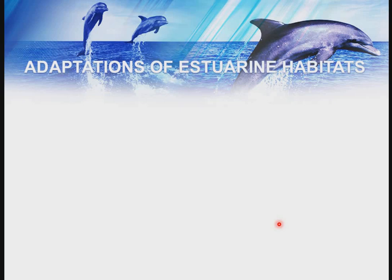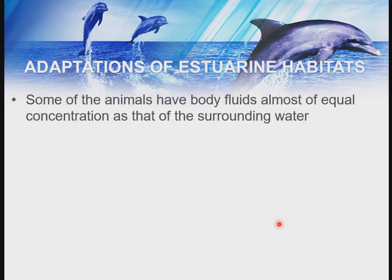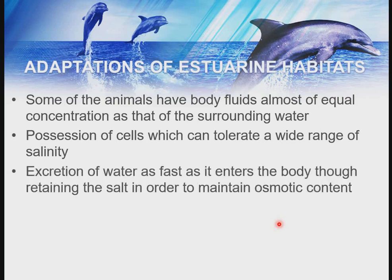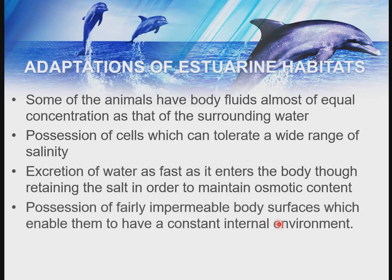Adaptations of estuarine organisms: some animals have body fluids of almost equal concentration to that of the surrounding water. They possess cells that can tolerate a wide range of salinity. They also excrete water as fast as it enters the body to minimize salt retention and maintain osmotic balance. They also possess very impermeable body surfaces which enable them to maintain a constant internal environment.